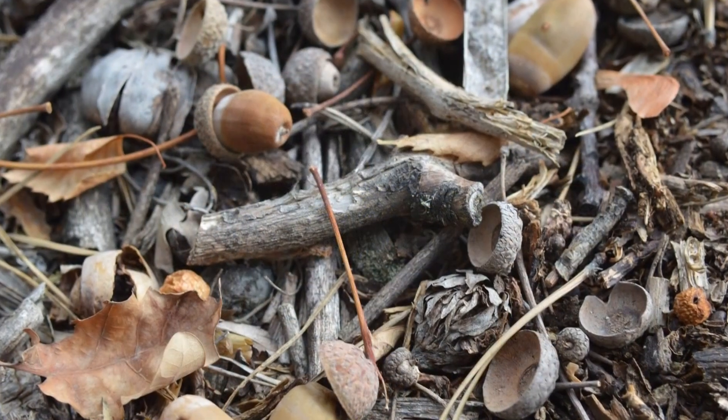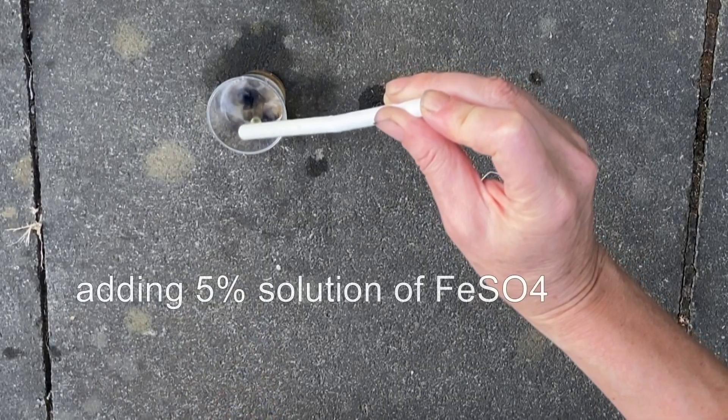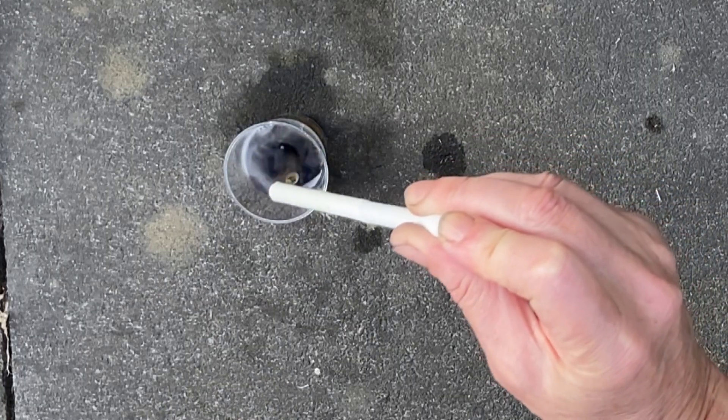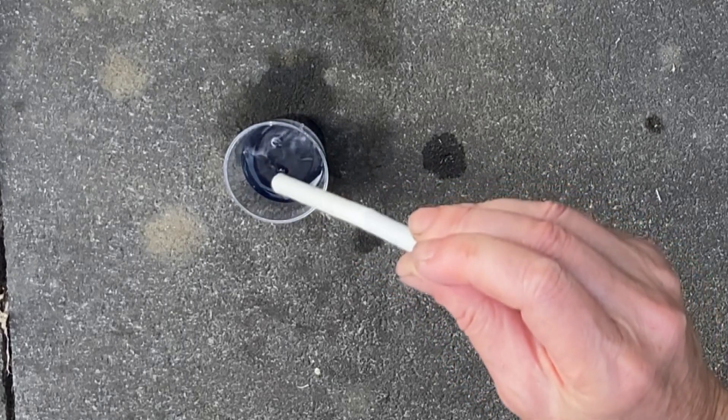All tannins show a common feature. They darken in presence of iron salts. Each plant can be easily tested by preparing a decoction, to which a pinch of iron sulfite is added. The solution blackens, the plant contains tannins.